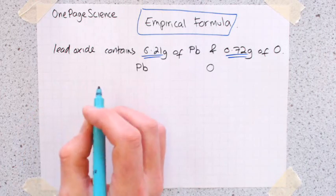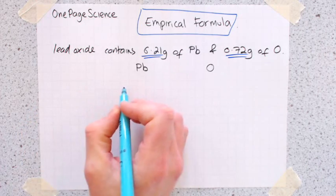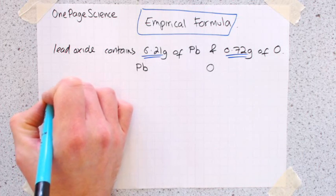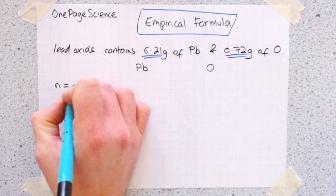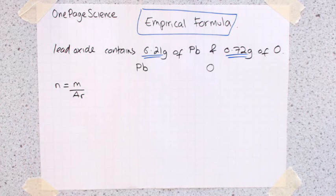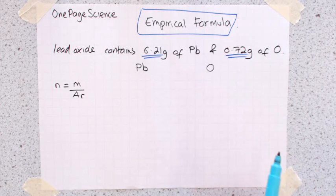So if you look at the video I've shown earlier, to convert mass into moles, moles into mass, we use this equation: N equals M over AR. And then we start filling out this grid.